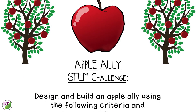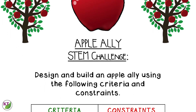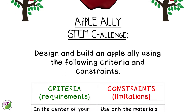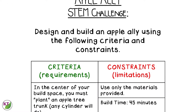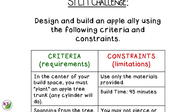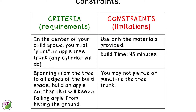The criteria and constraints list is almost deceptively simple. The students are simply going to plant an apple tree and create a catcher that will prevent the apples from hitting the ground when they fall from the tree. You're going to want to give students at least 45 minutes to build, and the students may not pierce or puncture the tree trunk.